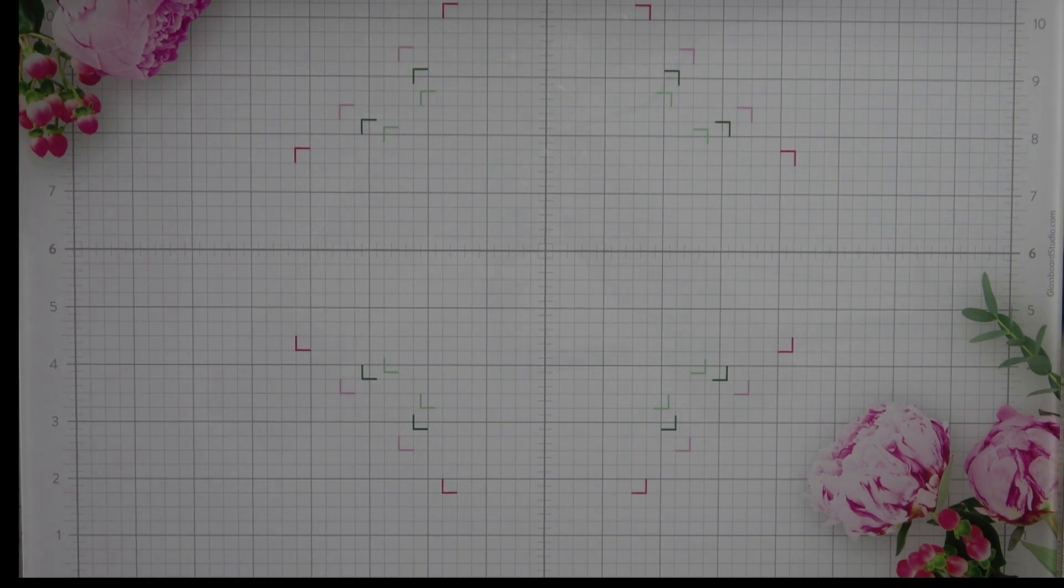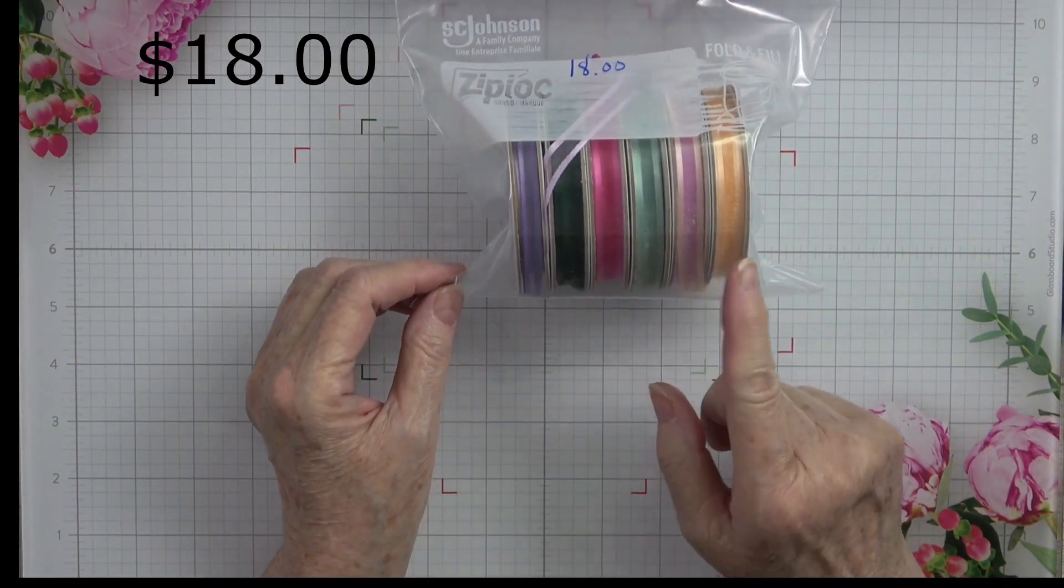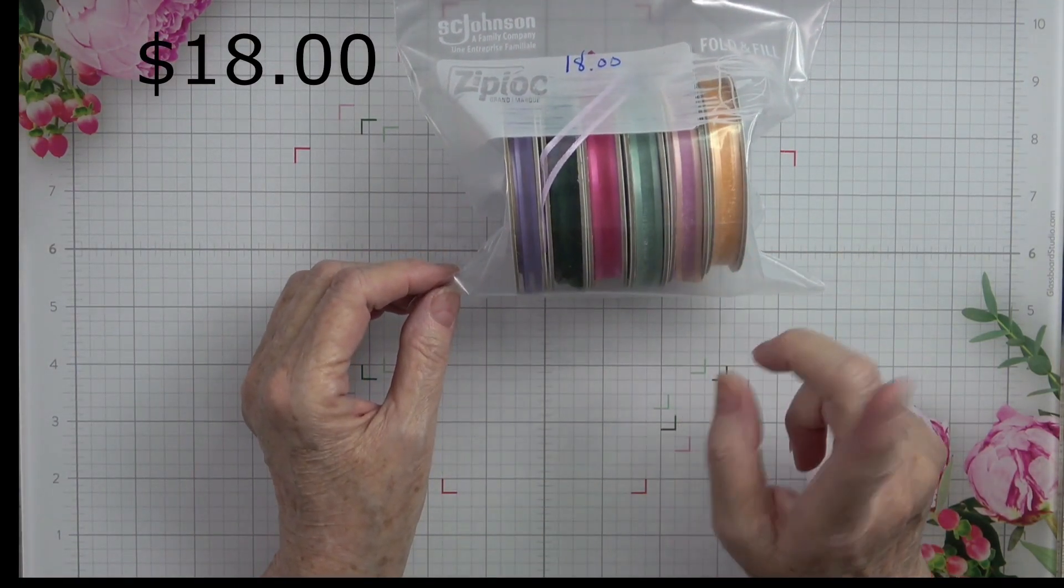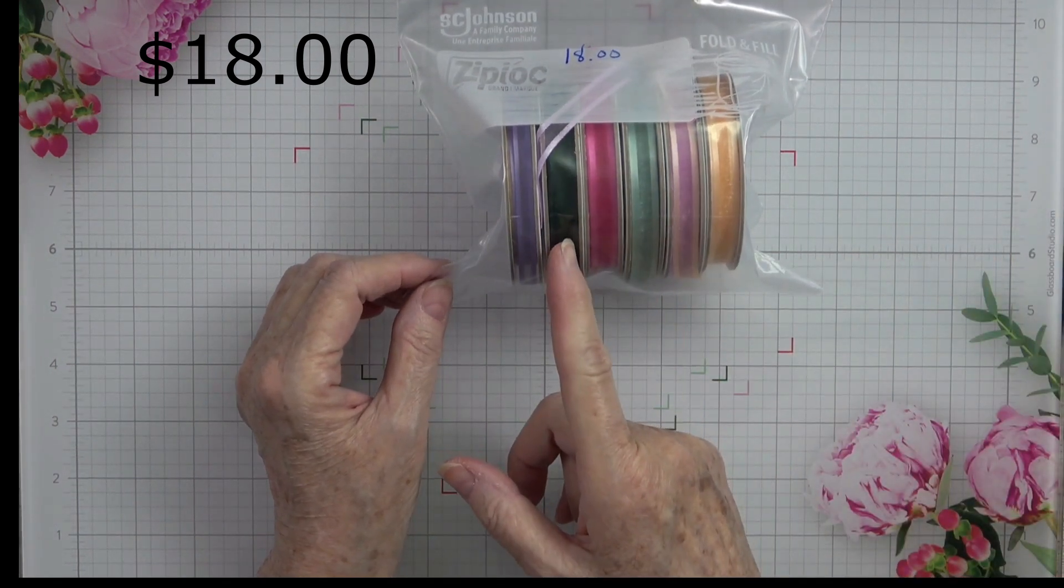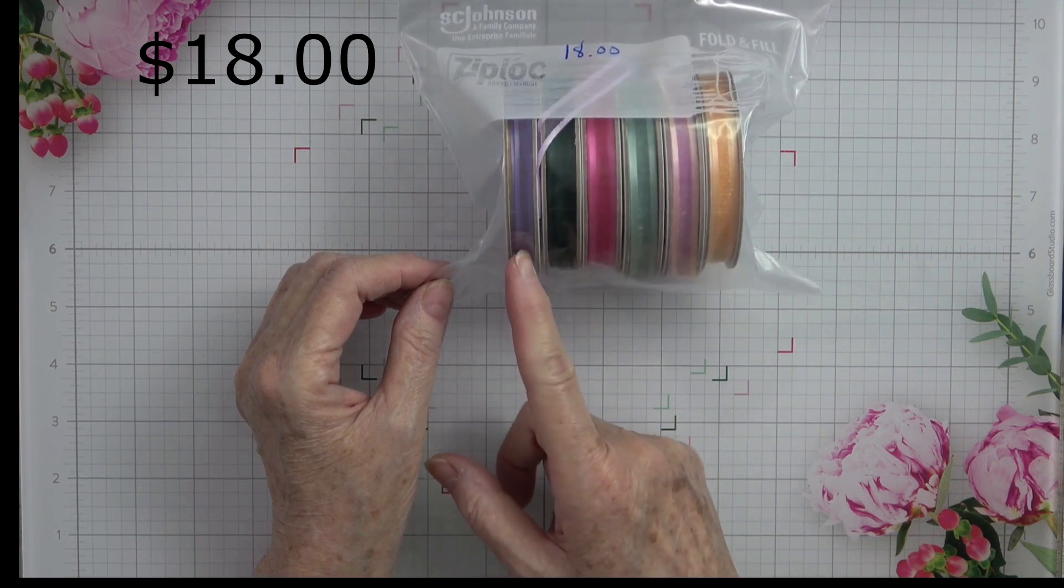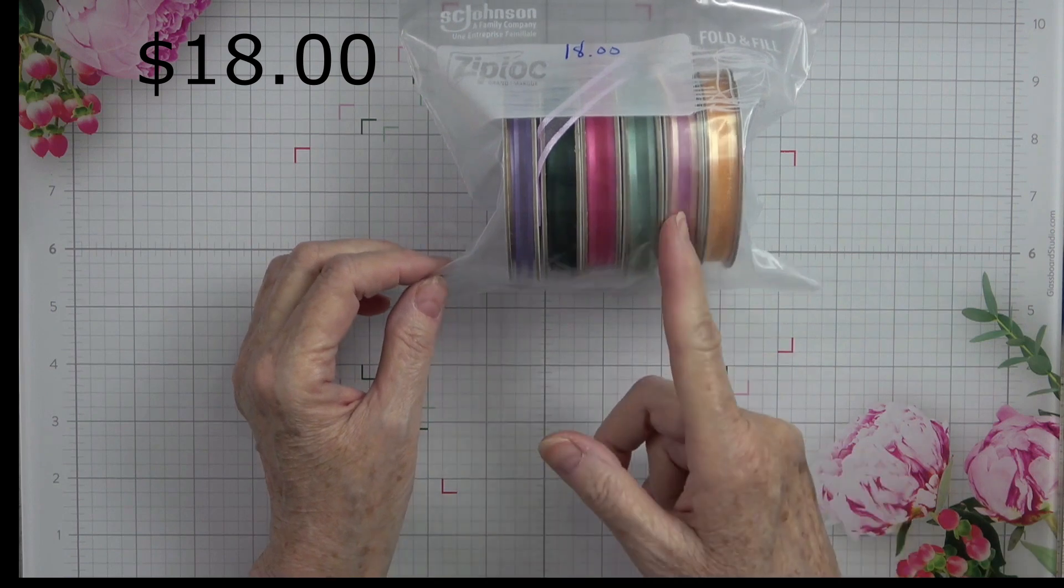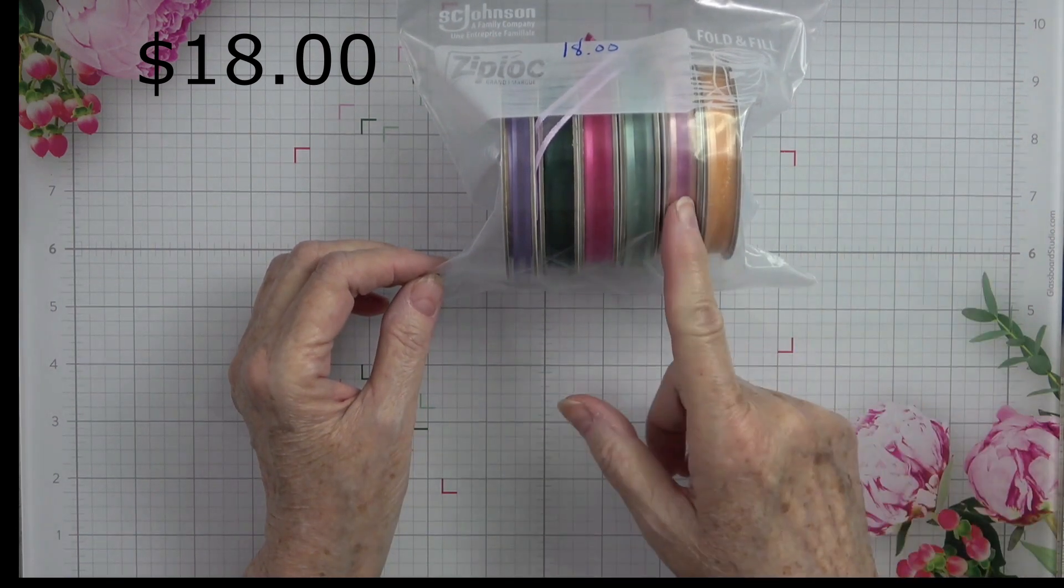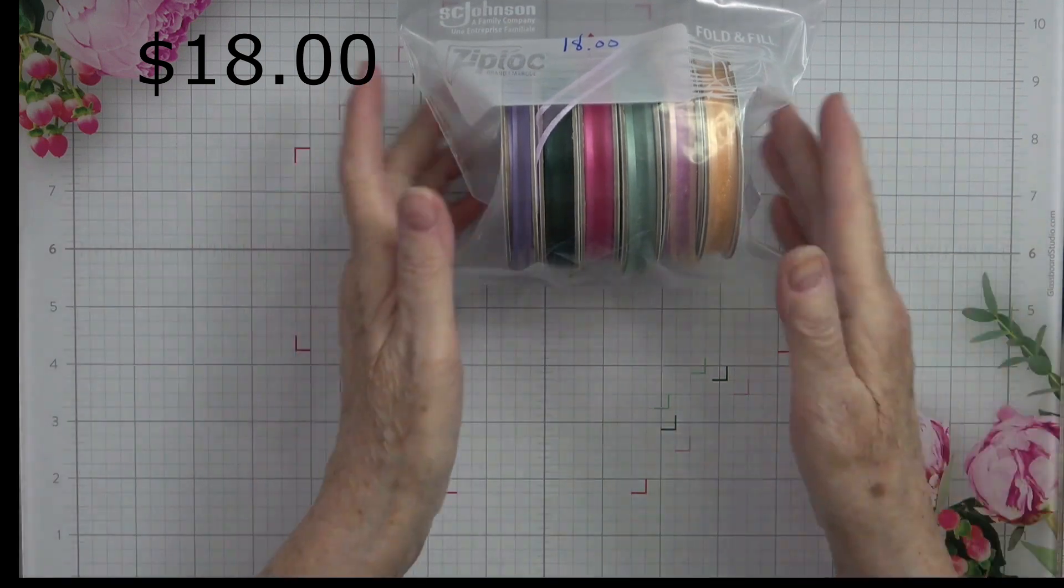I'm going to start off with the ones that are priced different than everything else. I have one pack that has five colors in it, and these were in colors one year. I believe Soft Succulent, Evening Evergreen, Polished Pink. I believe that was Fresh Freesha, which they brought that color back, and I'm not sure about that one.